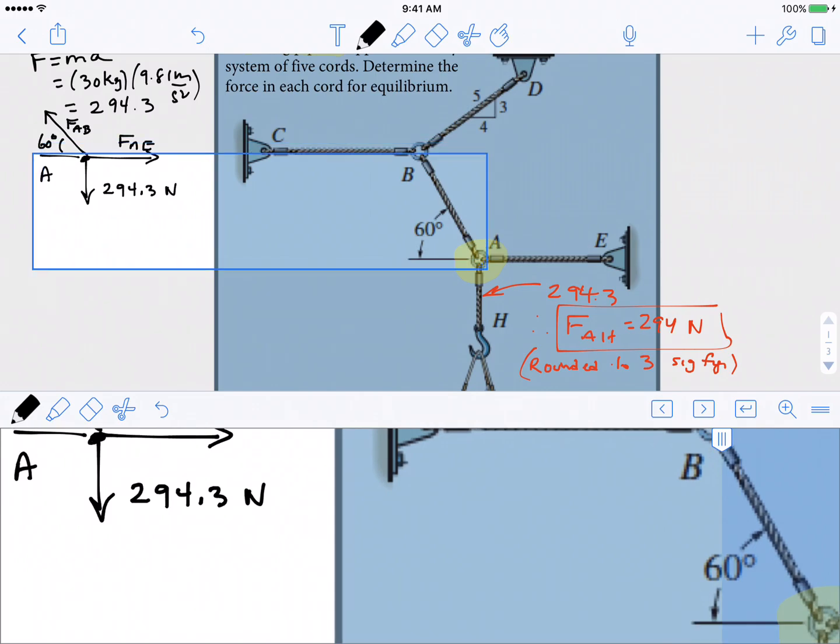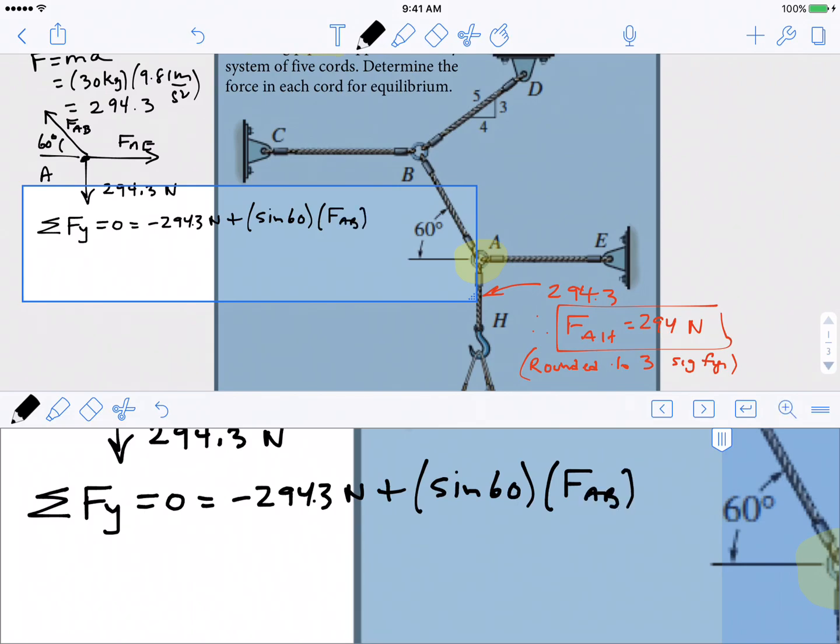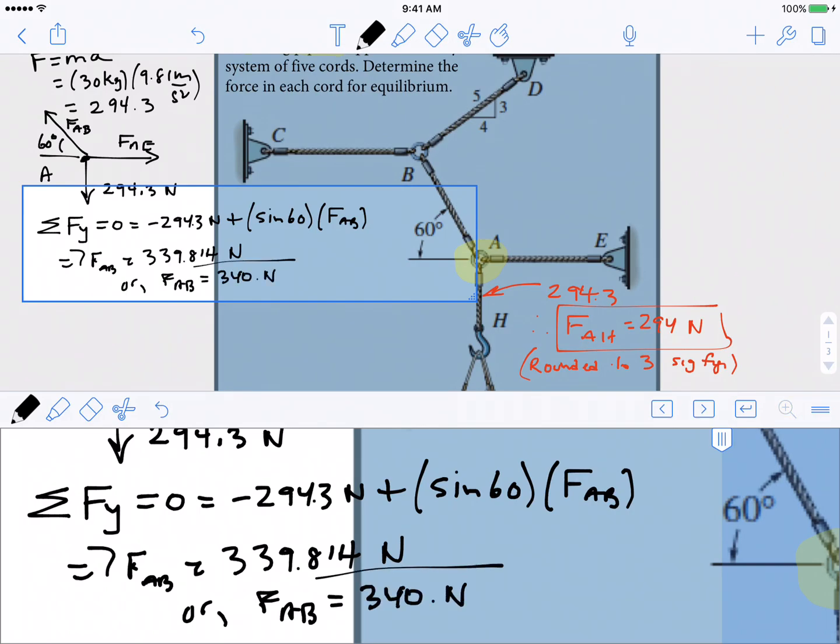We have an angle here of 60 degrees. We are now in a position to draw the equations of equilibrium relative to point A. I'd like to start by writing the equation of equilibrium in the y direction. Since the particle in A is in equilibrium, we can write that the sum of the forces in the y direction is equal to zero, which is equal to minus 294.3 newtons plus the y part of FAB. The y part of FAB is represented by the sine of 60 times FAB. When you do that, you end up finding that FAB is equal to 339.84 newtons, or FAB equals 340 newtons.